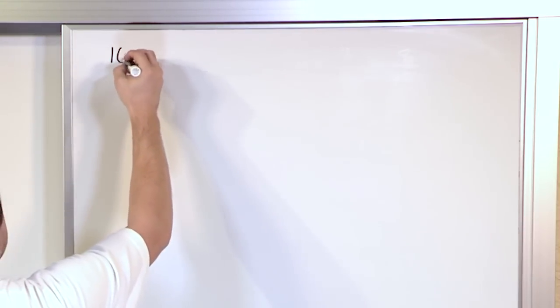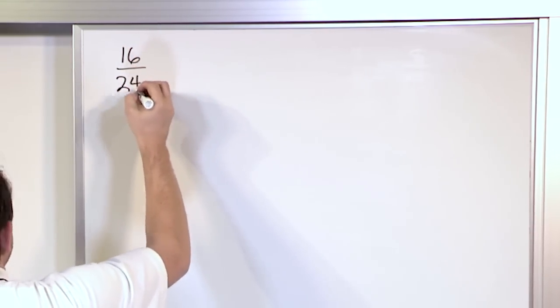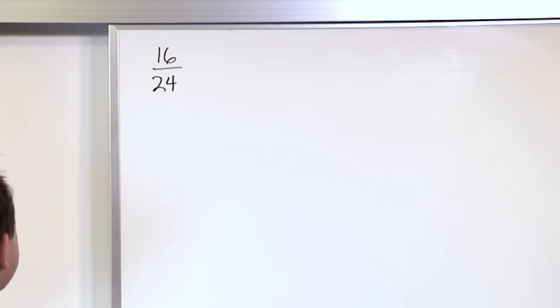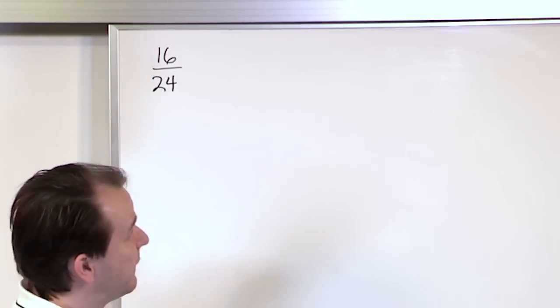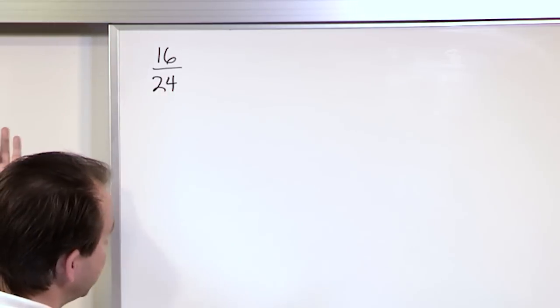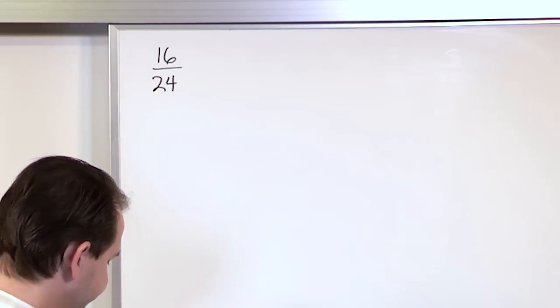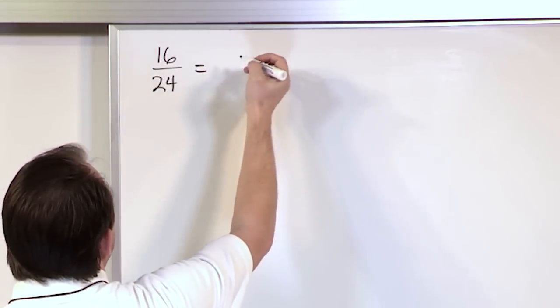What if I have 16 24ths? Is this simplified or not? And the answer is it's not simplified because I can tell right away I can divide the top and bottom by at least the number 2 and make it simpler.